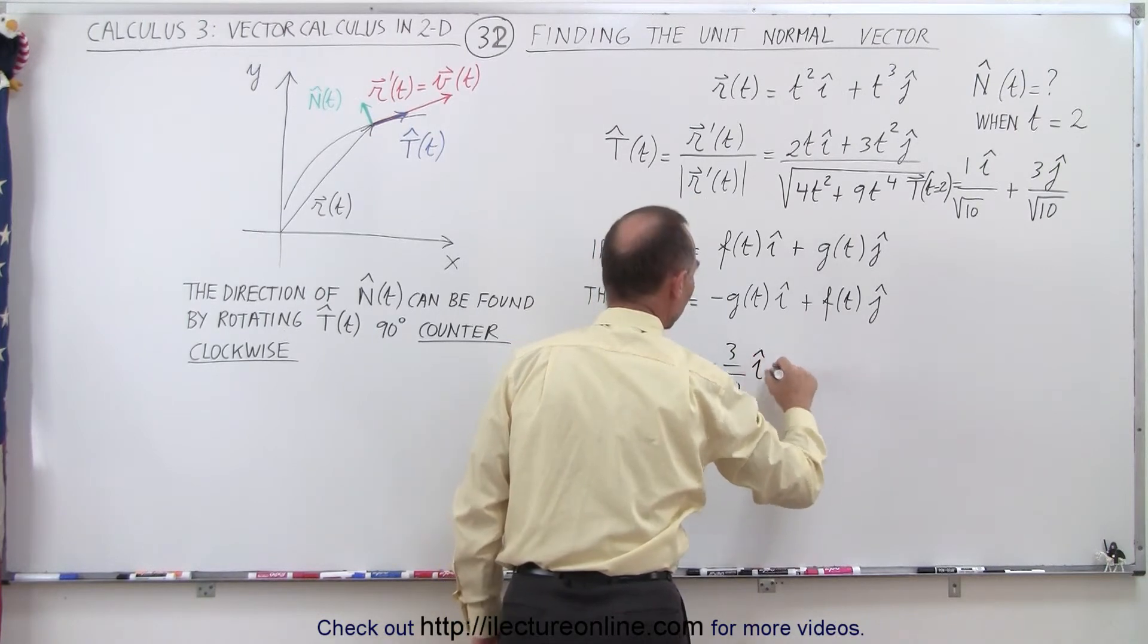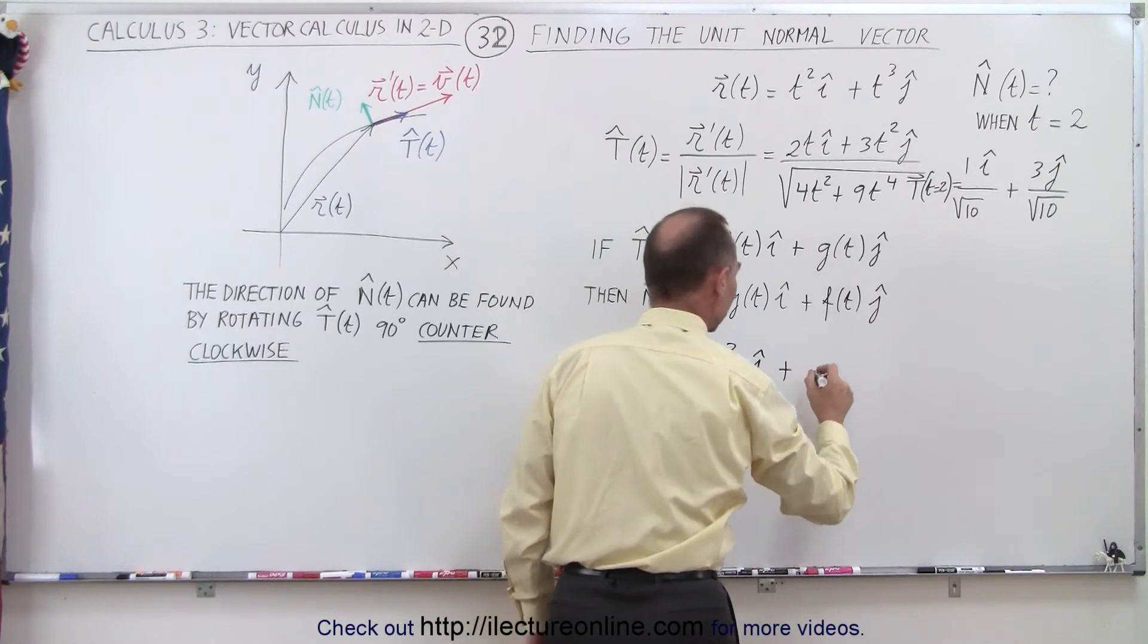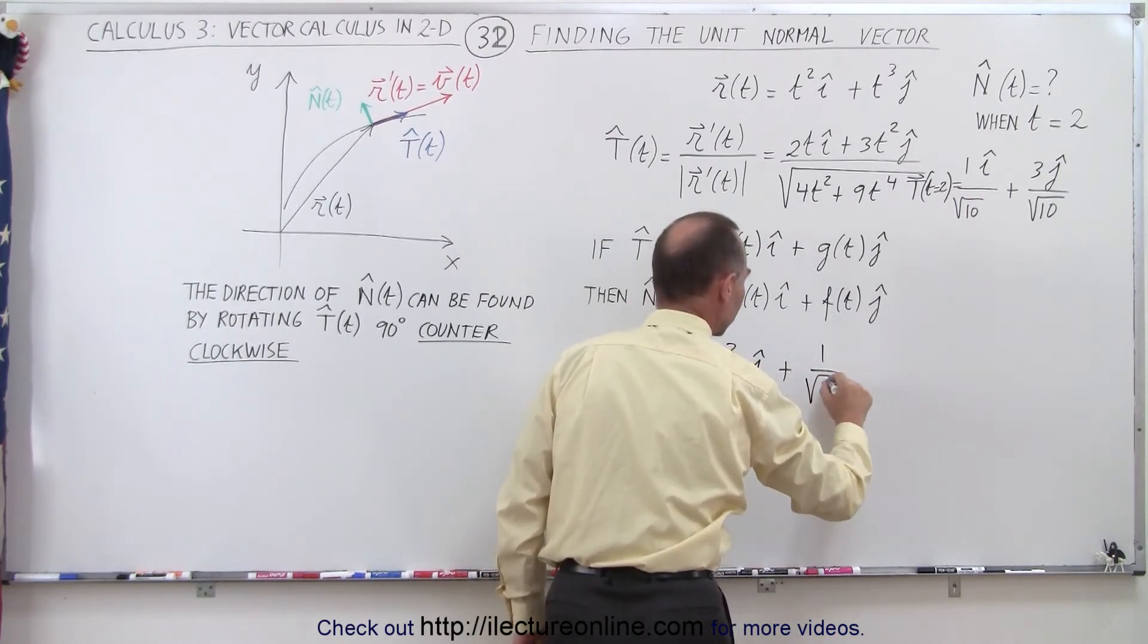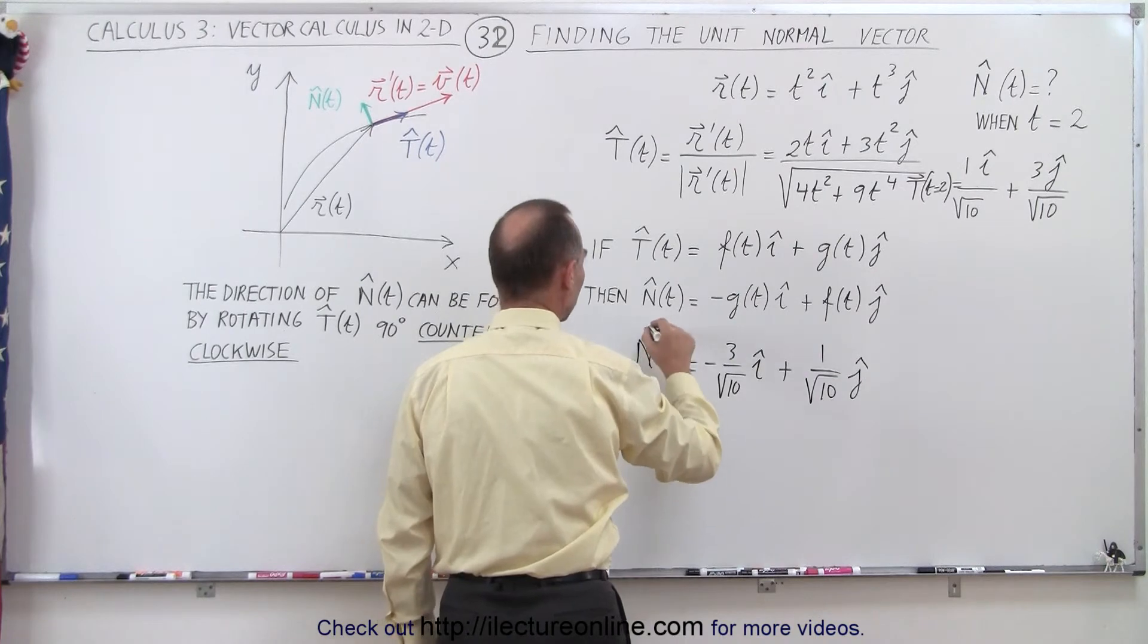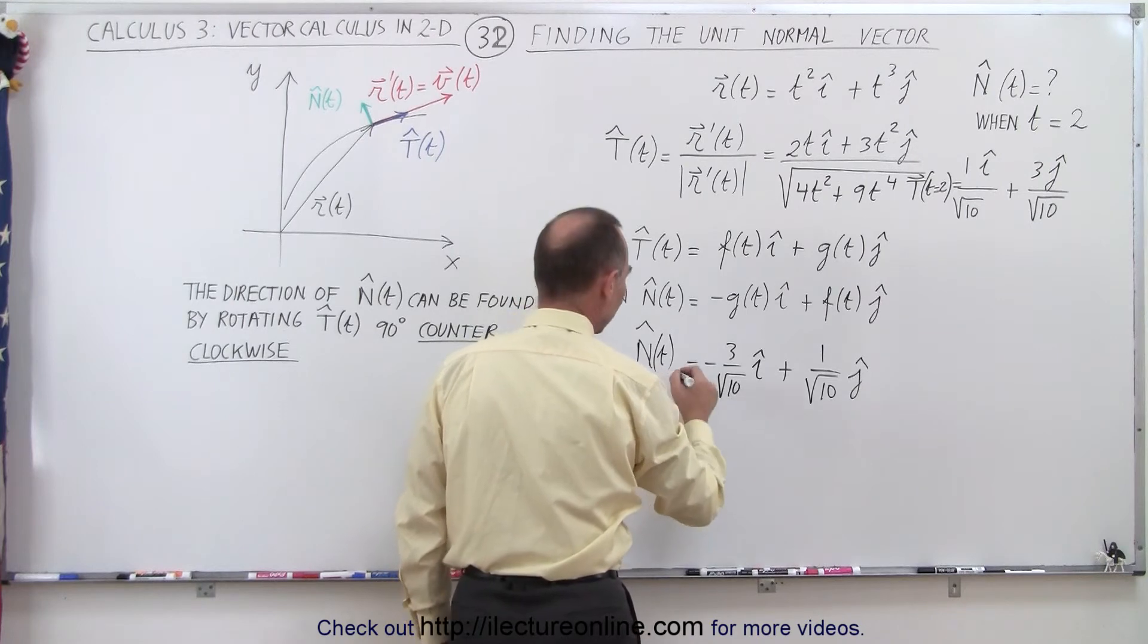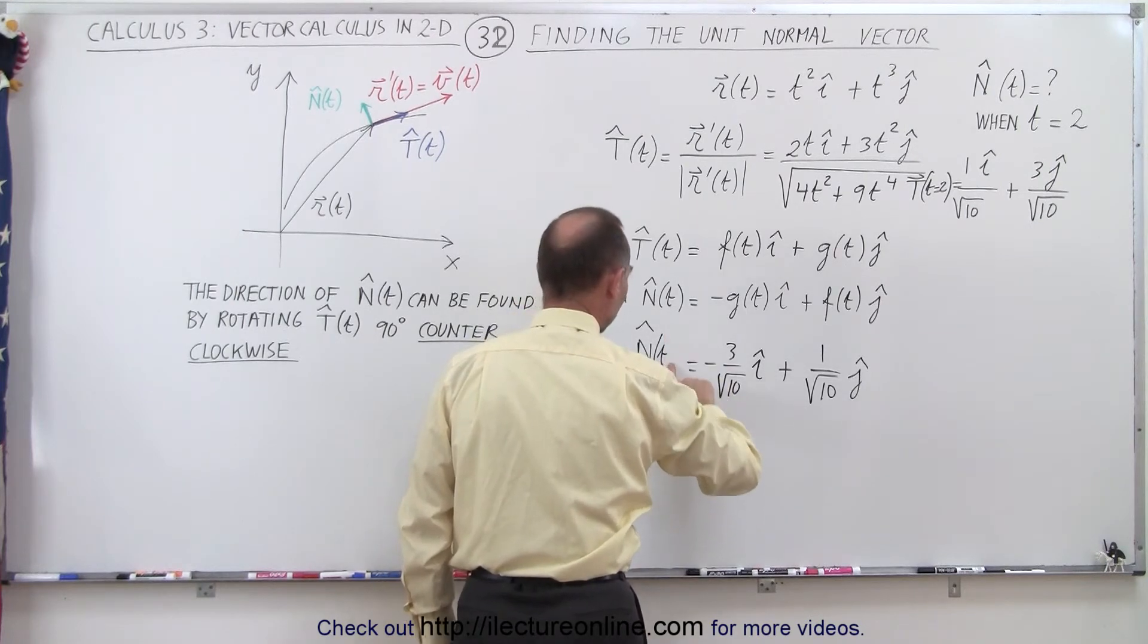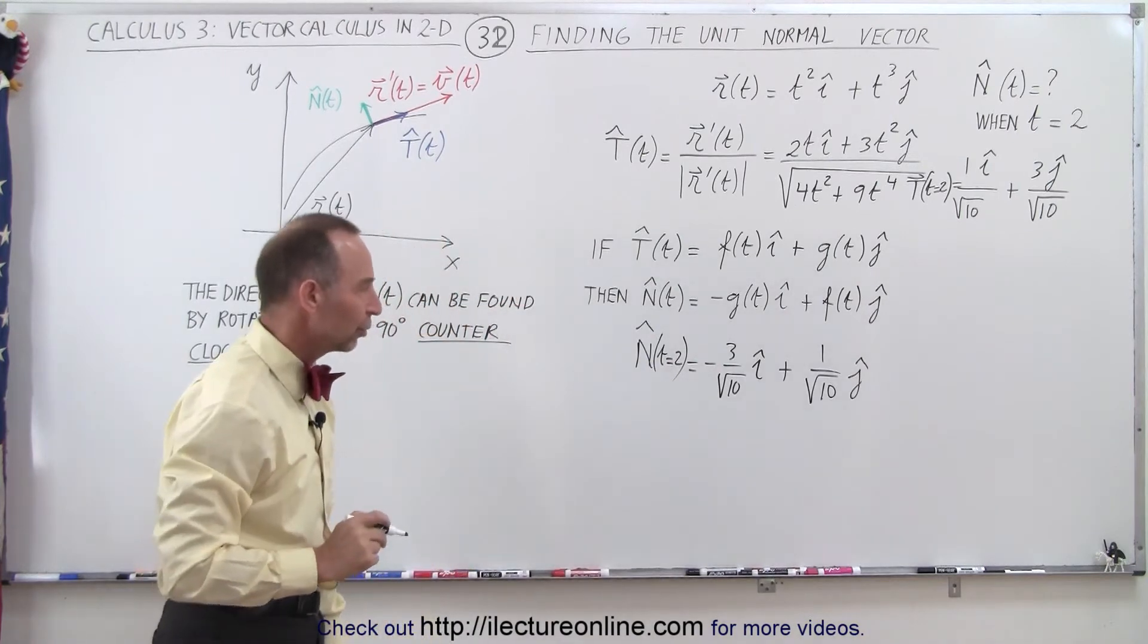That would be in the i direction, plus the positive of this component, 1 over the square root of 10, in the j direction. So that becomes the unit normal vector when the parametric variable t equals 2.